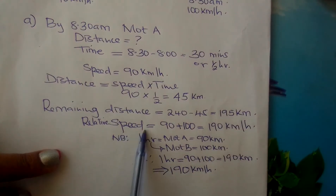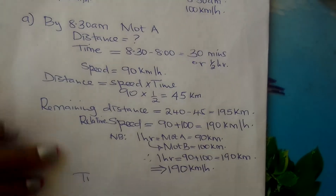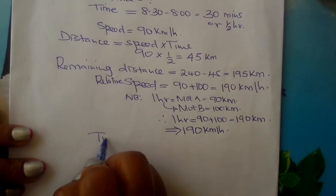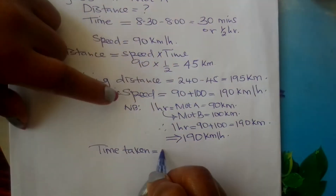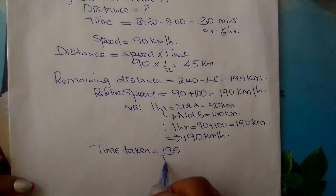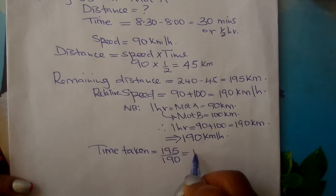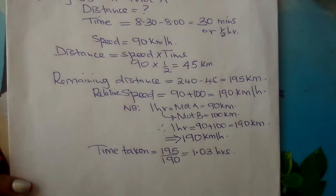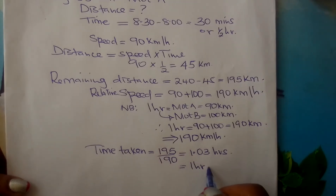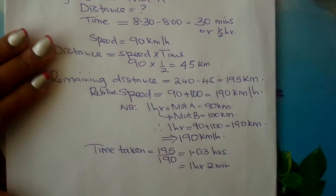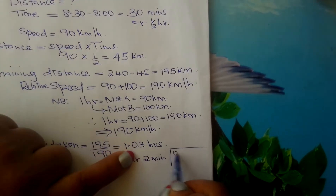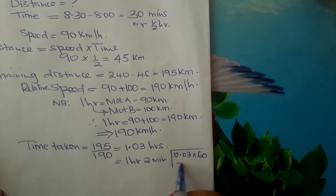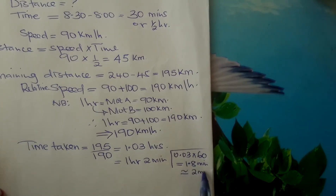With the distance of 195 km and the relative speed of 190 km per hour, we can find the time taken for the two to meet. Time equals distance divided by speed: 195 divided by 190 gives 1.03 hours using a calculator, which is the same as one hour and about two minutes. To get the two minutes: 0.03 hours multiplied by 60 gives approximately 1.8 minutes, which is about two minutes.